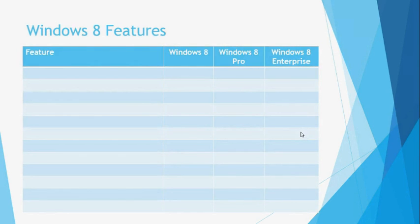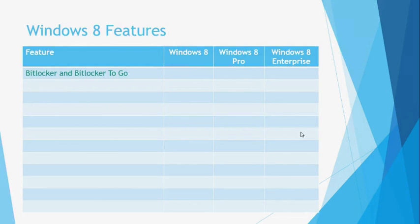The second major difference between editions is the actual features of the operating system itself. Different editions of Windows 8 offer different built-in features — we will be covering them all in later lessons. The first feature to discuss is BitLocker and BitLocker To Go. BitLocker allows you to encrypt your computer's entire hard drive, so if a computer is lost or stolen, a thief will not be able to gain access. BitLocker To Go provides the same protection for portable USB flash drives. These features are only available in Windows 8 Pro and Windows 8 Enterprise.